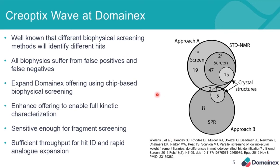Here I've highlighted a figure from Martin Scanlon's 2013 paper. In this instance, he ran an STD-NMR primary screen as well as an SPR screen for the same target, and the Venn diagram demonstrates the overlap between the two screening methods — and you can see there isn't a great deal of overlap.